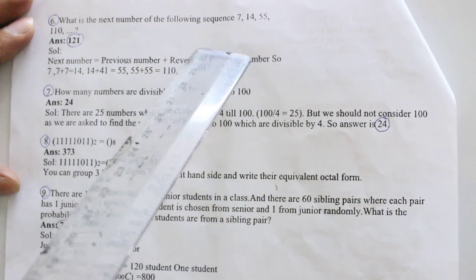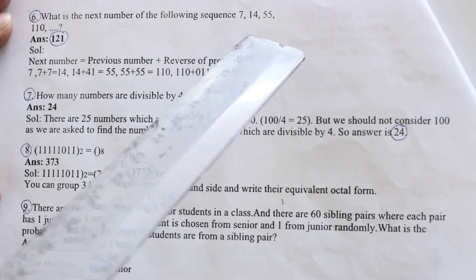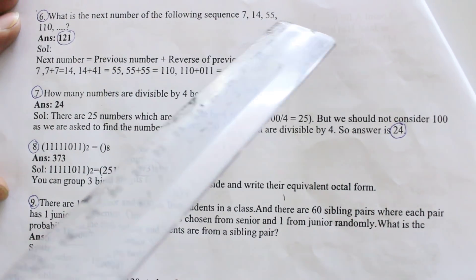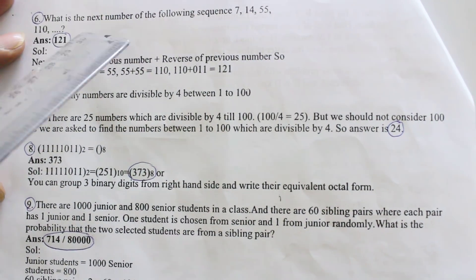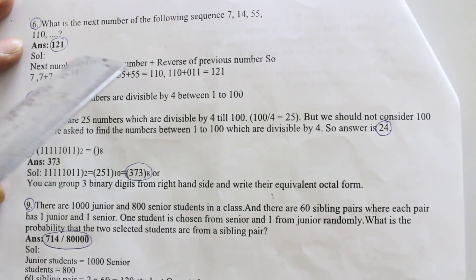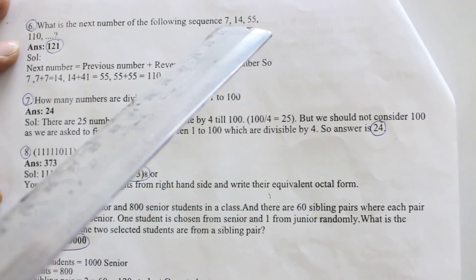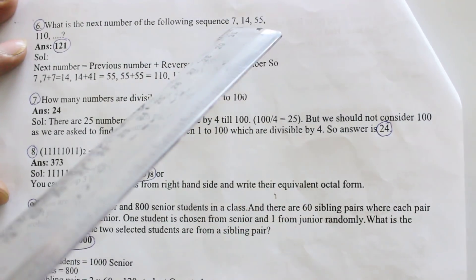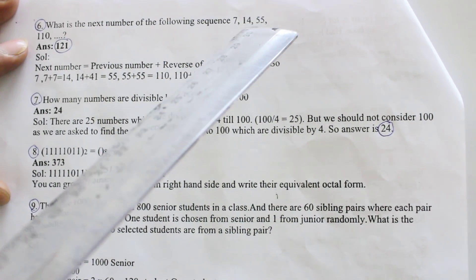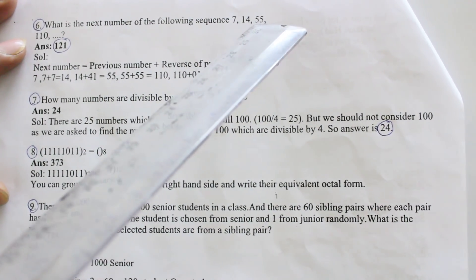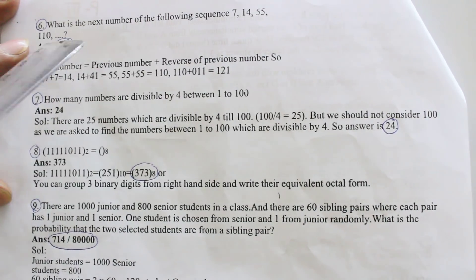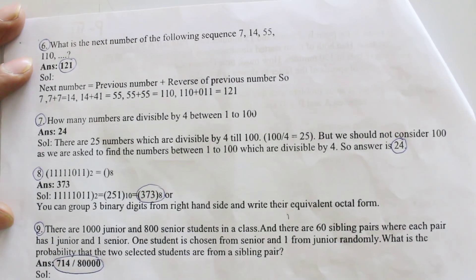Come to the next question. What is the next number of the following sequence: 7, 14, 55 and so on? 121 is the answer. This logic is the reverse of the number is the adding. 7 reverse of the number 7 adding, 14 reverse 41 adding, 55 reverse 55 and like this the logic. Your answer is 121.